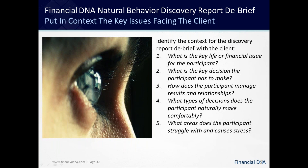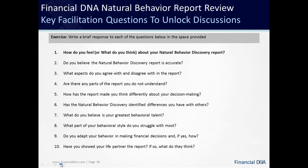Having context is important. What I always do when facilitating the Financial DNA reports, without fail, is ask the first question — highlighted here: 'How do you feel?' or 'What did you think about your natural behavior discovery report?' I ask the feeling-based question when the person is more relational in style, and the 'what do you think' question when they're more rational. The idea is to draw them out, get their responses to what they read, what they agreed with, what they disagreed with. If you need to push a little further, start asking the other questions going down in order — two to ten. You don't need to ask all ten; these are open-ended questions to get the client talking.